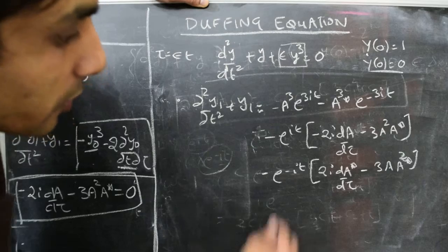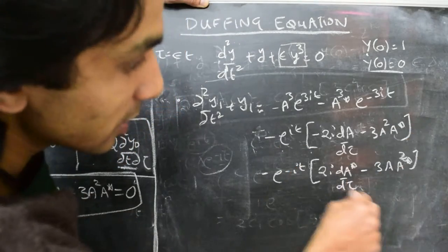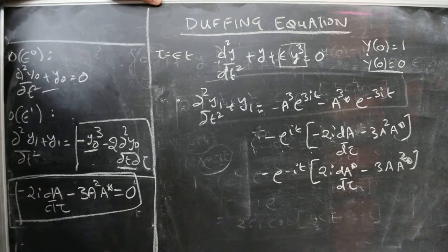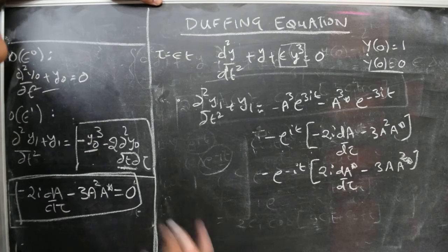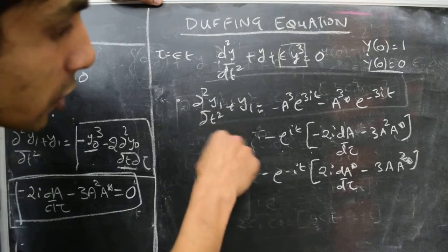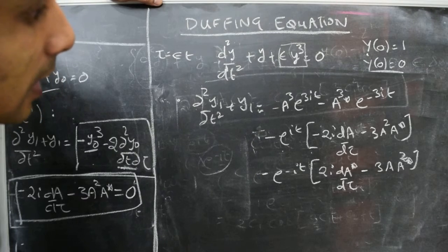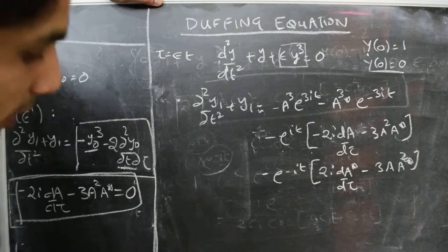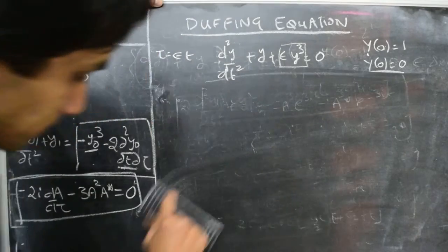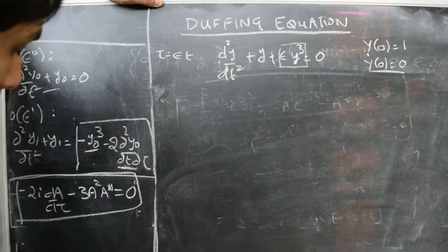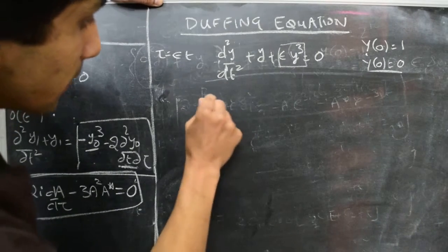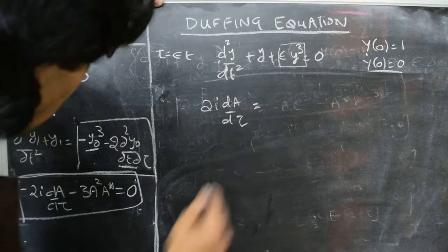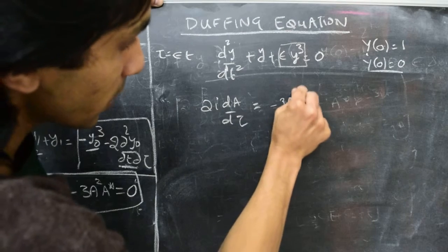Ensuring no secular terms involves making the terms in these square brackets equal to zero, which gives us a differential equation for the function a. Once we figure this out, we can be assured that the solution for y1 is bounded. The differential equation is essentially: 2i dA/dτ equals minus 3a² a*.